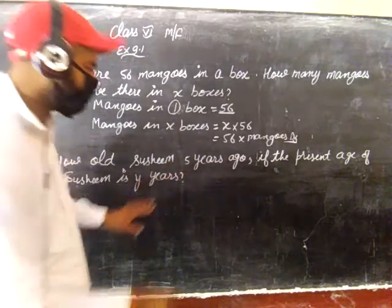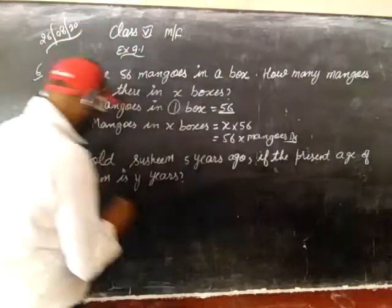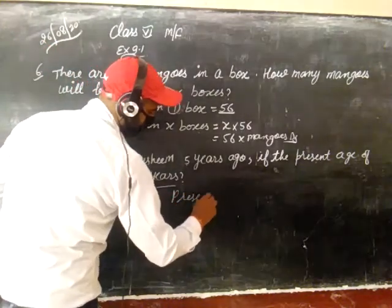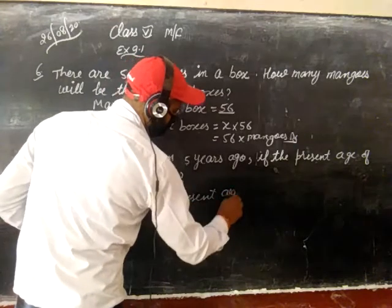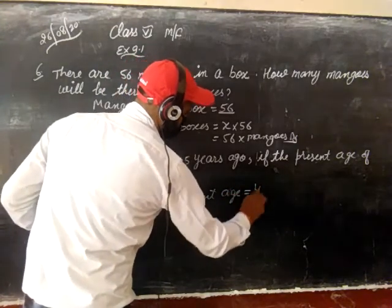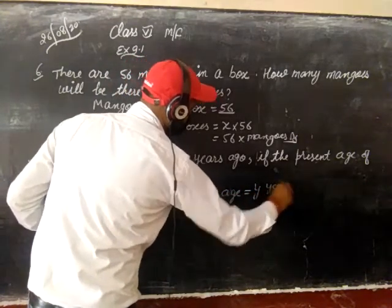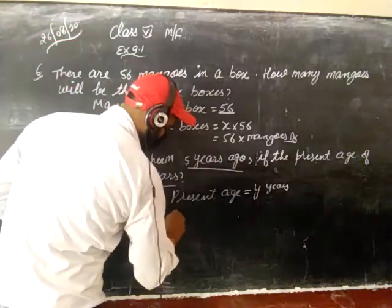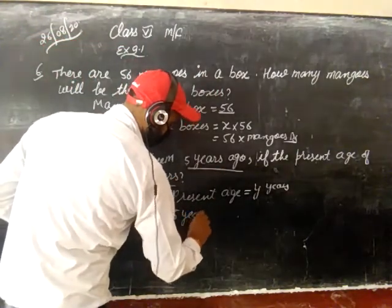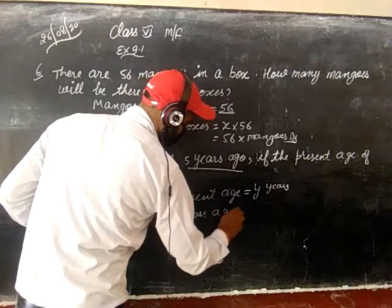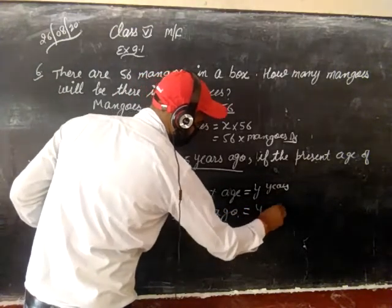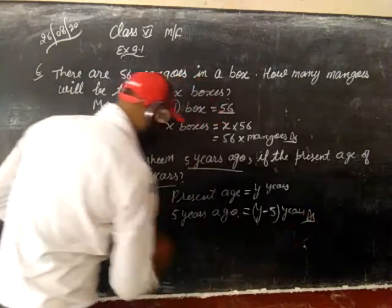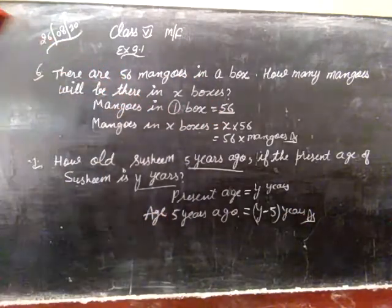If the present age of Susim is y years, how old will Susim be in 5 years? In 5 years, it is equal to y minus 5 years.